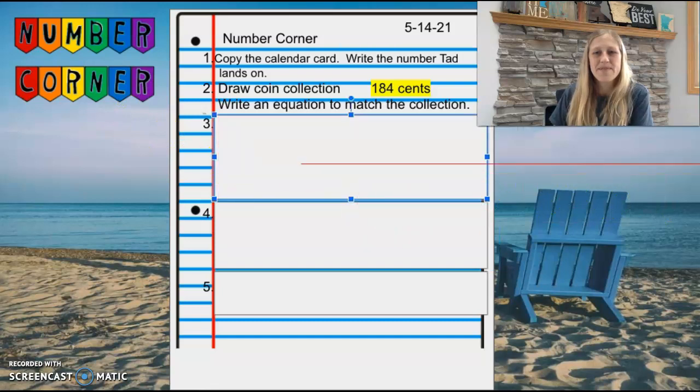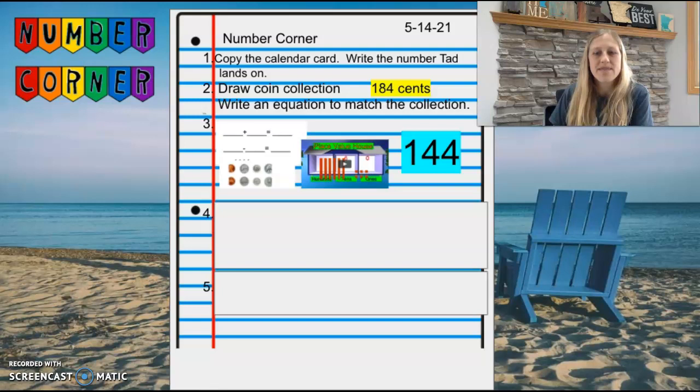For number three, we are representing the number of days we've been in school. As of today, we have been in school for 144 days. You are representing the number 144 with an addition equation, subtraction equation, coin group, and hundred blocks, ten sticks, and one blocks. Feel free to add another equation that has an addition and a subtraction sign.